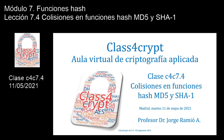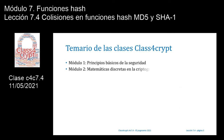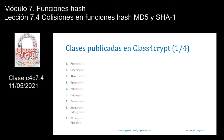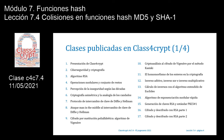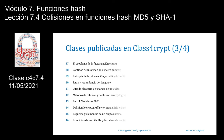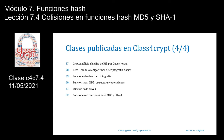Bienvenidos a Class4Crypt, tu aula virtual de criptografía aplicada. Clase número 7.4: colisiones en funciones hash MD5 y SHA-1. Esta clase pertenece al módulo 7 dedicado a las funciones hash. En las siguientes cuatro diapositivas te muestro los títulos de todas las lecciones publicadas en este canal Class4Crypt, alcanzando hoy con la lección número 62, un total de 40.300 visualizaciones.